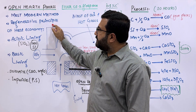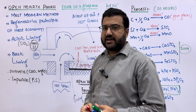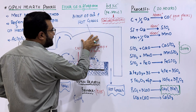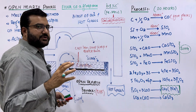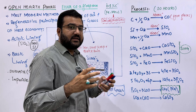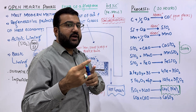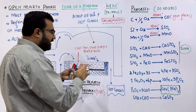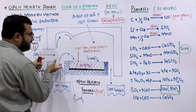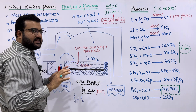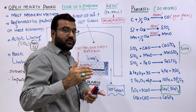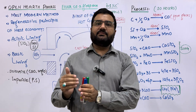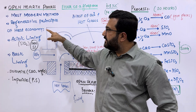The open hearth furnace works on the regenerative principle of heat economy. The roof of the open hearth furnace is very low, and this furnace is made up of special bricks that absorb most of the heat — almost 80 to 85 percent — from the hot waste gases. That absorbed heat is then returned to the fresh air and relatively cooler gases introduced into the furnace. In this way, fuel consumption is reduced and the temperature of the furnace is maintained, making the process economical.